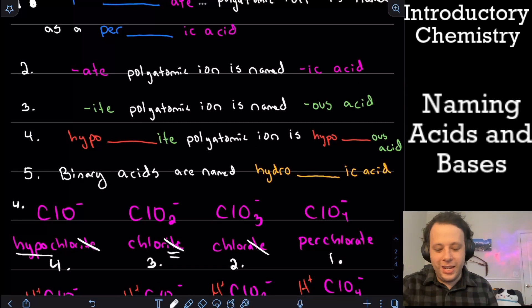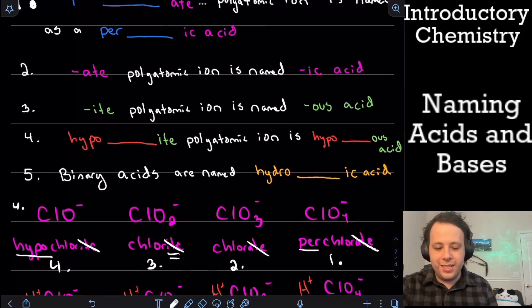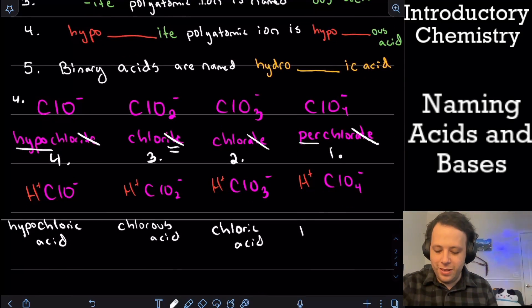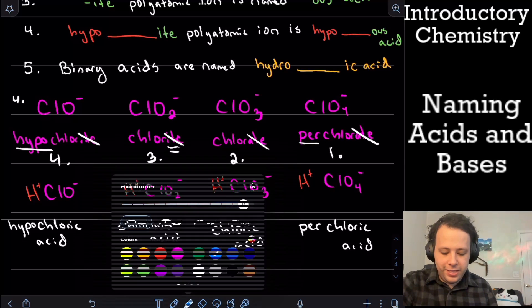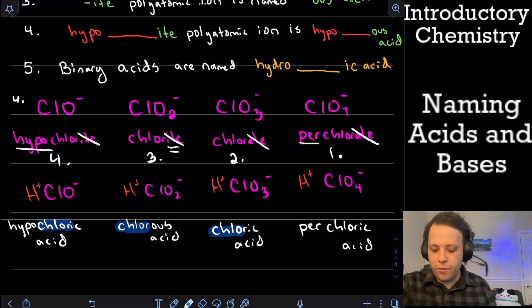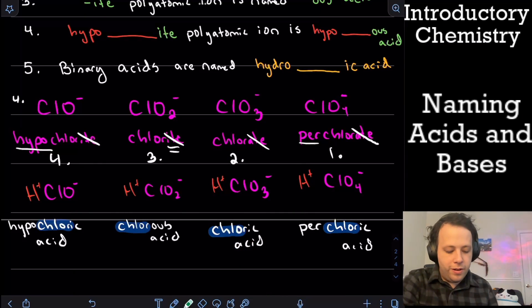Now for perchlorate, what are we going to do there? We're going to keep the per, drop the ate, and this is going to become perchloric acid for its name. So perchloric acid. All right.